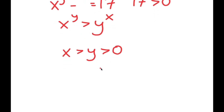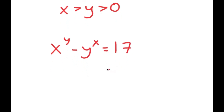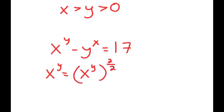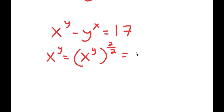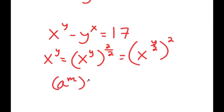Now that we know this, I'm going to rewrite my equation: x to the power of y minus y to the power of x is equal to 17. I can rewrite x to the power of y as x to the power of y to the power of 2 over 2, because 2 over 2 is the same thing as 1. This I can rewrite as x to the power of y over 2 to the power of 2, because if I have something in the form a to the power of m to the power of n, this is the same thing as a to the power of m times n.